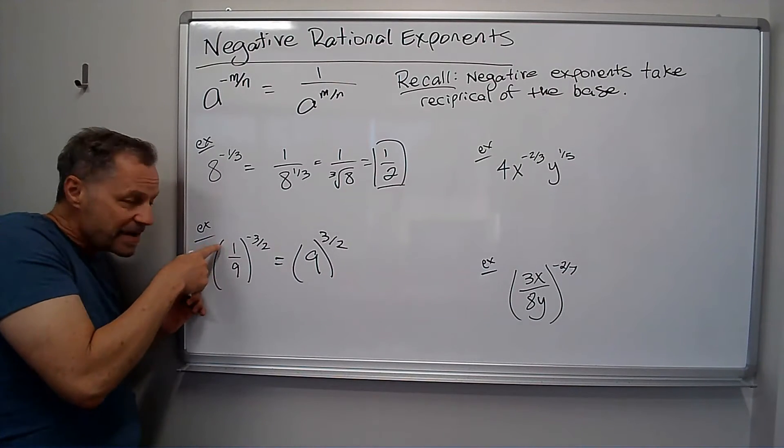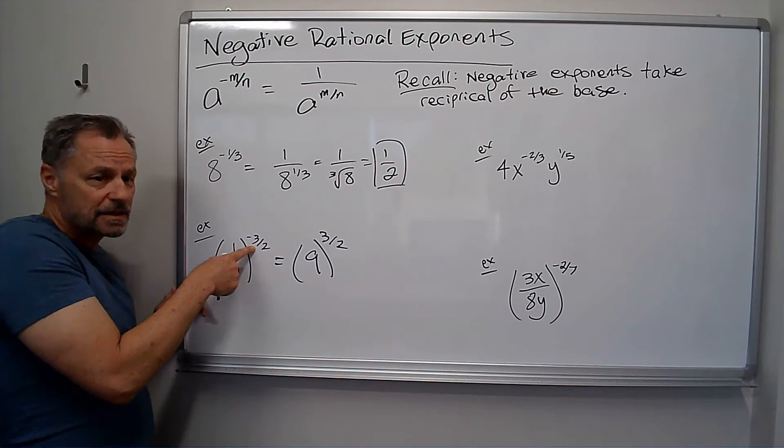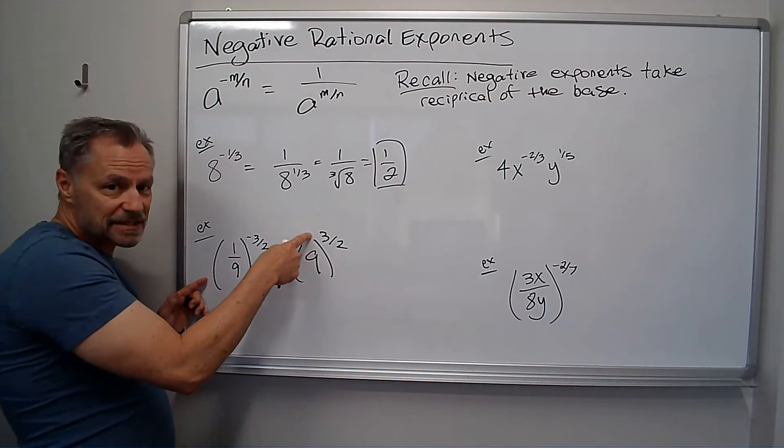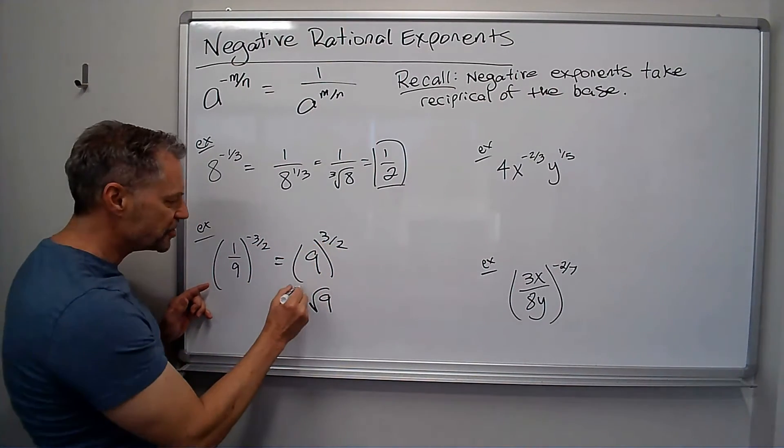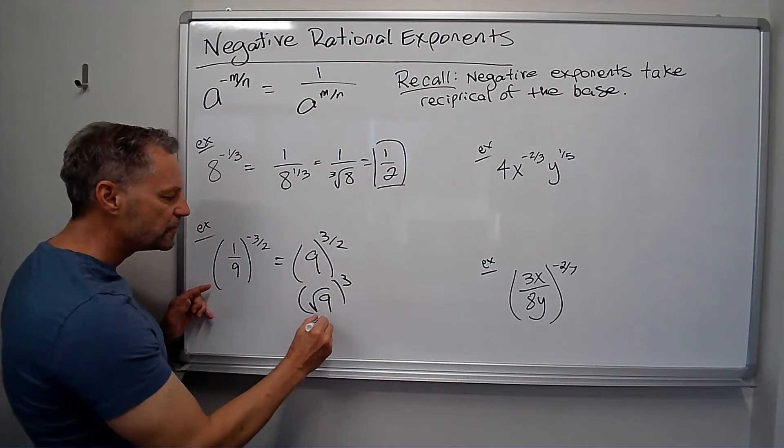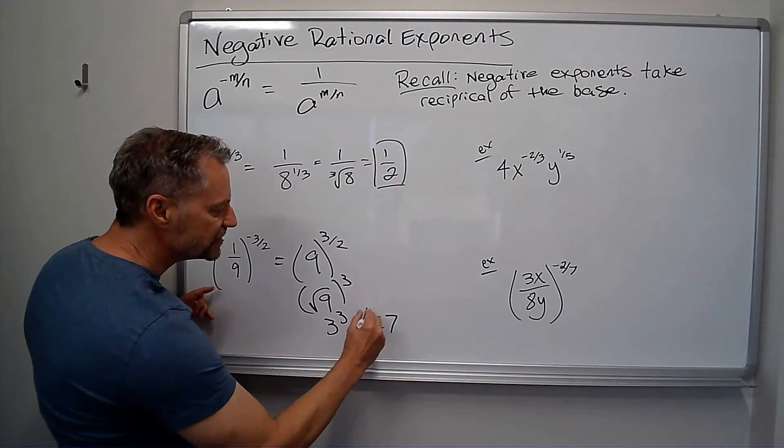Notice I took the reciprocal of the base of the 1/9, I didn't take the reciprocal of the exponent, it's still 3/2. And so remember, that's the root, that's the power, so the square root of 9, but then to the 3rd power. Well, 3 to the 3rd, or just 27. We'll just leave it there.